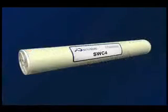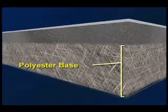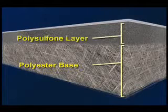With unwound membranes, we construct the flat sheet membrane using Hydronautics automated casting equipment. We begin the process with a fabric support base and then coat it with a microporous polysulfone layer.